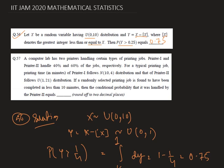Now let's see the next question. A computer lab has two printers handling a certain type of printing jobs. Printer 1 and Printer 2 handle 40% and 60% of the jobs respectively. The printing time in minutes of Printer 1 follows Normal(10,4) and Printer 2 follows Uniform(1,21). If a randomly selected printing job is completed in less than 10 minutes, find the conditional probability that it was handled by Printer 2.